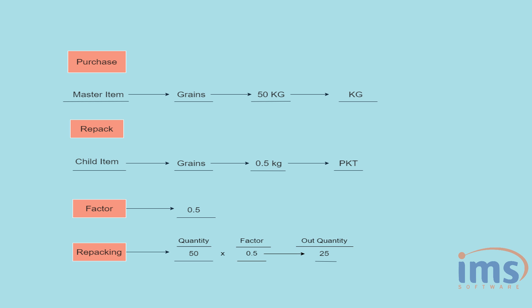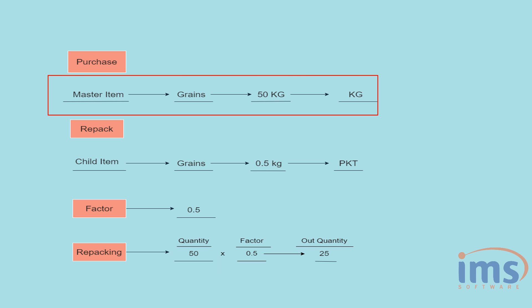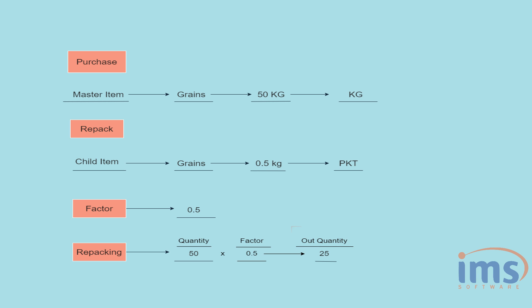The quantity of the child item is 50, which is multiplied by 0.5, equaling 25. This means 25 kilograms of grains will be taken out from the 'Grains 50 Kilograms' master item.